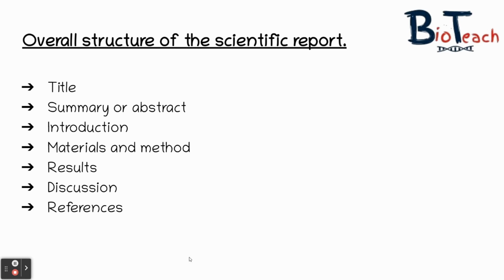The next part of your report is the abstract or summary. The purpose of the abstract is to give the reader a summary of the entire report for very quick reading. It should include your reasons for doing the work, your methods, your findings and your conclusions, and it needs to be fairly interesting and easy to read. The abstract is almost like a mini report which needs to make sense completely on its own. References must not be included, and nothing should appear in the abstract that isn't in the rest of the report. It's usually around 200 to 300 words, written in the past tense in one single paragraph. Most students find it easier to write the abstract right at the end after completing the entire report.